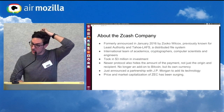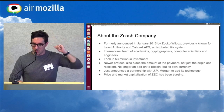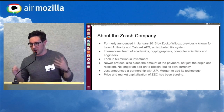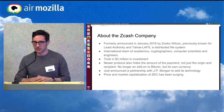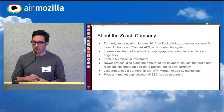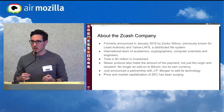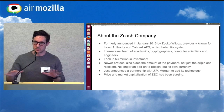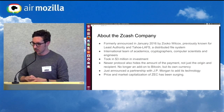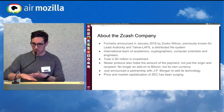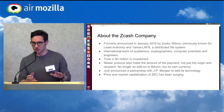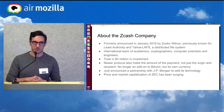About the Zcash Company — a lot of people thought this was a great idea, so they came together. It was announced at the beginning of 2016 by Zuko Wilcox, who was previously known for his work on Least Authority Systems in Tahoe. Tahoe was a distributed file system where you can store files across multiple servers, and if you take down any one server, the data will still be there.